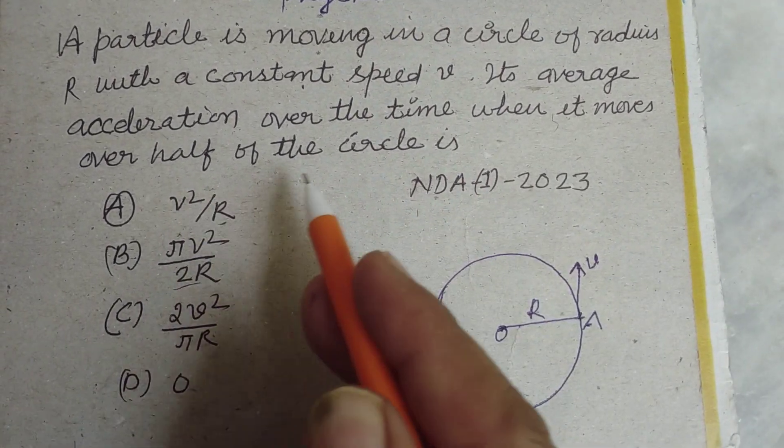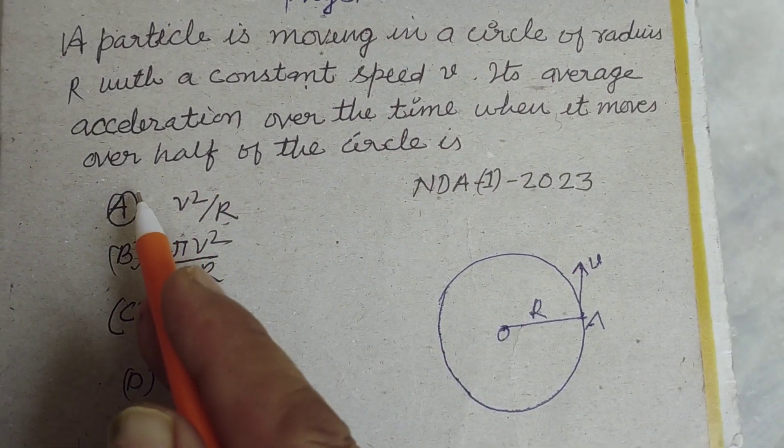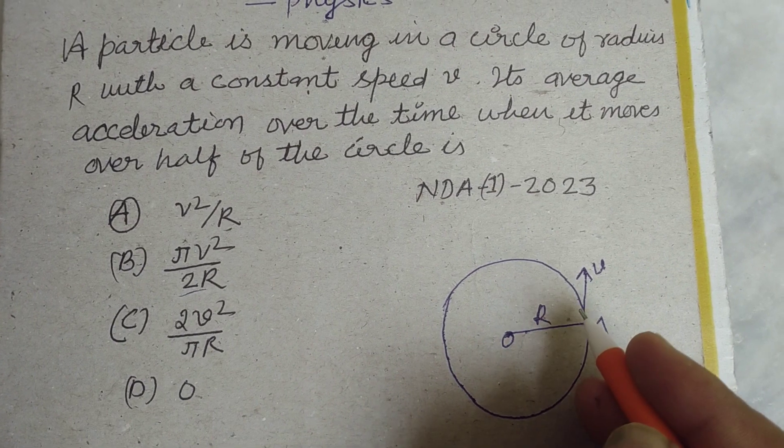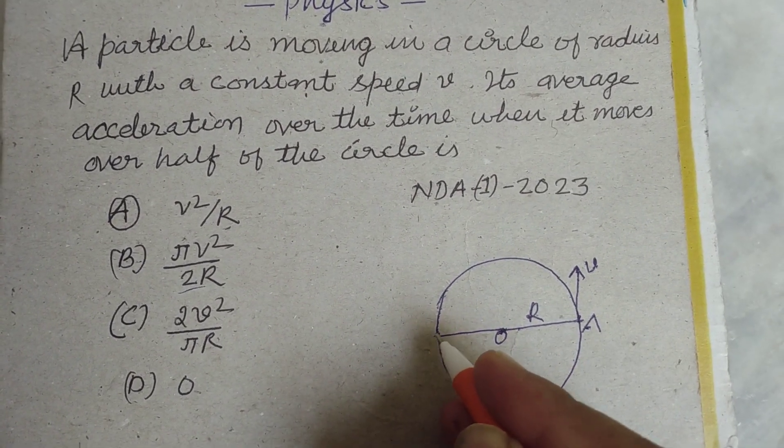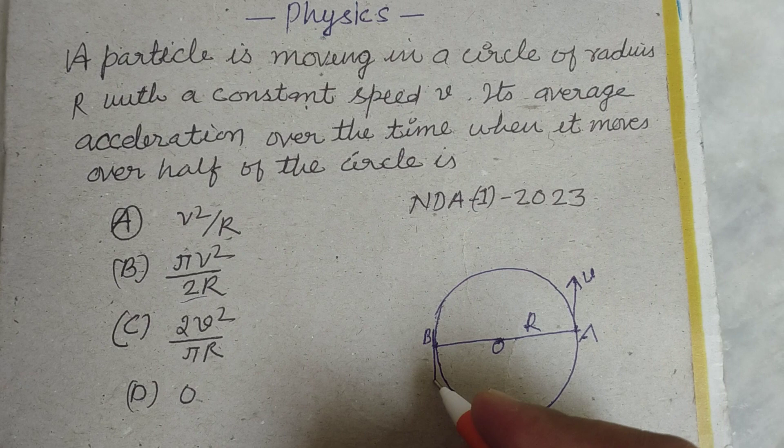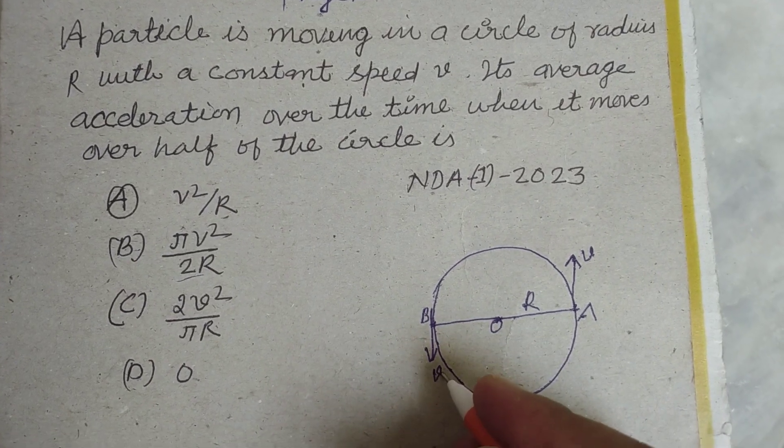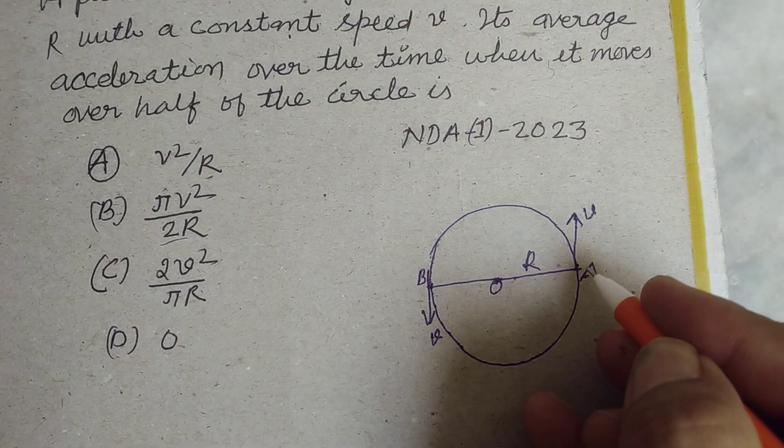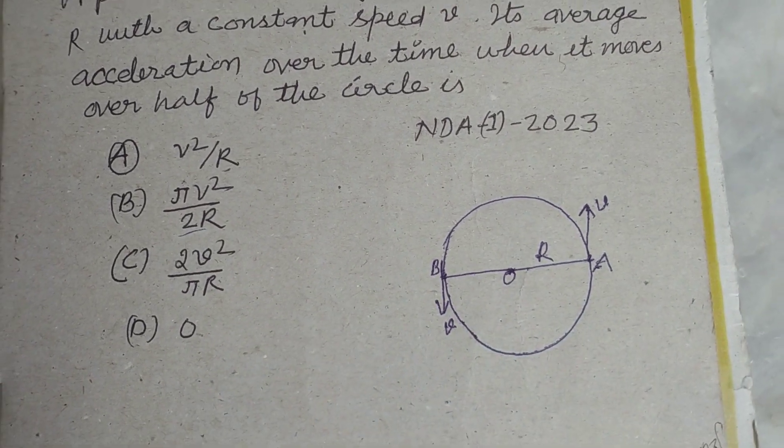Its average acceleration over the time when it moves over half of the circle. So when it moves half of the circle it comes at point B and its direction becomes in the opposite direction of speed at B.